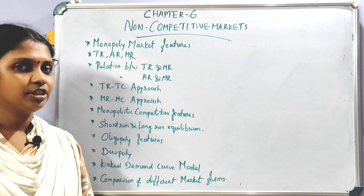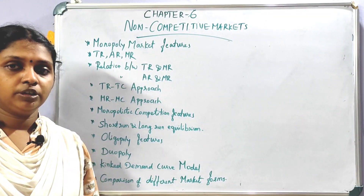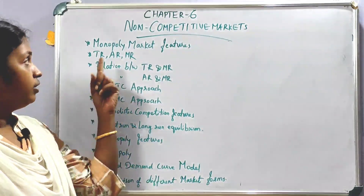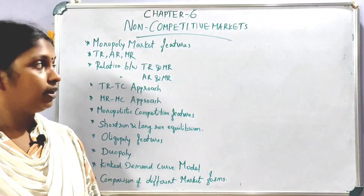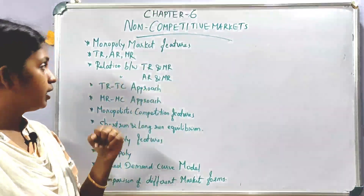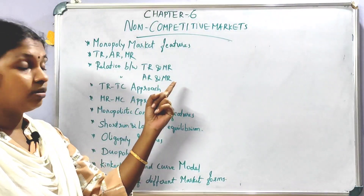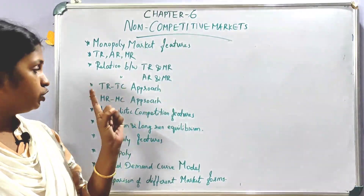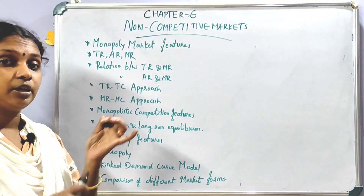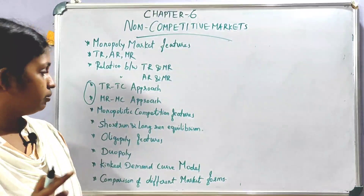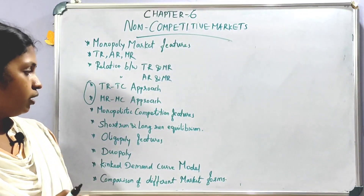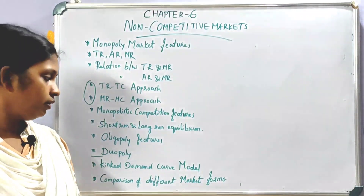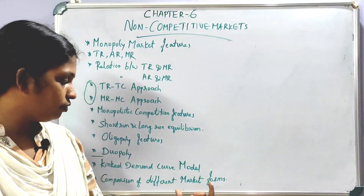In the last chapter, we go to Non-Competitive Markets. We learned perfect competition in the fourth chapter; now we learn the other three markets. First is monopoly market features. Then Total Revenue, Average Revenue, and Marginal Revenue — and the relationship between TR and MR, and AR and MR. We study the TRTC approach and MRMC approach. Then monopolistic competition with short-run and long-run equilibrium. Then oligopoly, duopoly, and kinked demand curve. Finally, a comparison of different market forms.